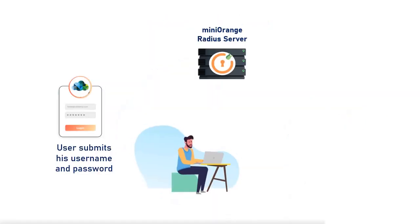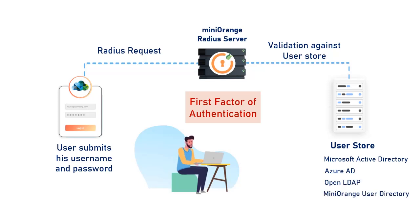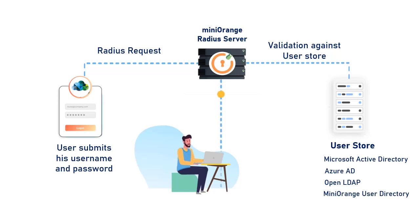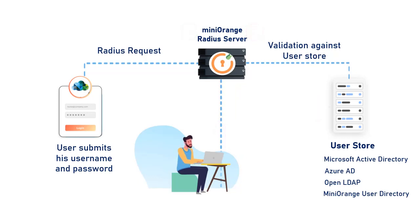The user submits his username and password, which is accepted by the Mini Orange Radius server as a Radius request. The user can be validated against any user directory like Microsoft Active Directory, Azure AD, OpenLDAP, or you can keep users in the Mini Orange user directory as well. After the first level of authentication, Mini Orange prompts the user with two-factor authentication and grants or revokes access based on the 2FA input by the user.